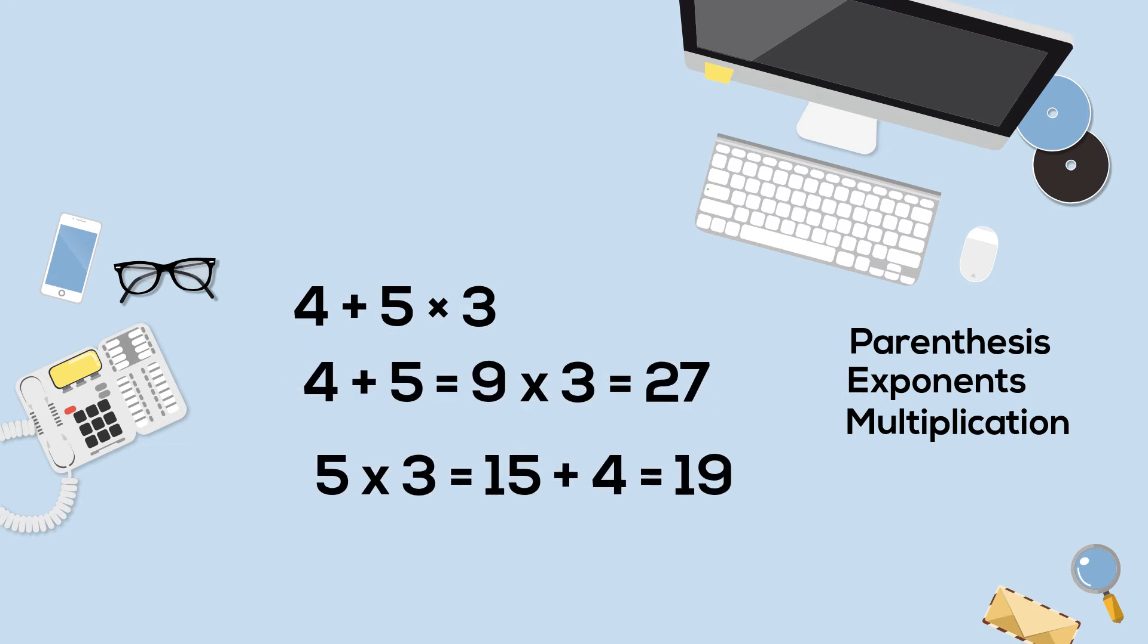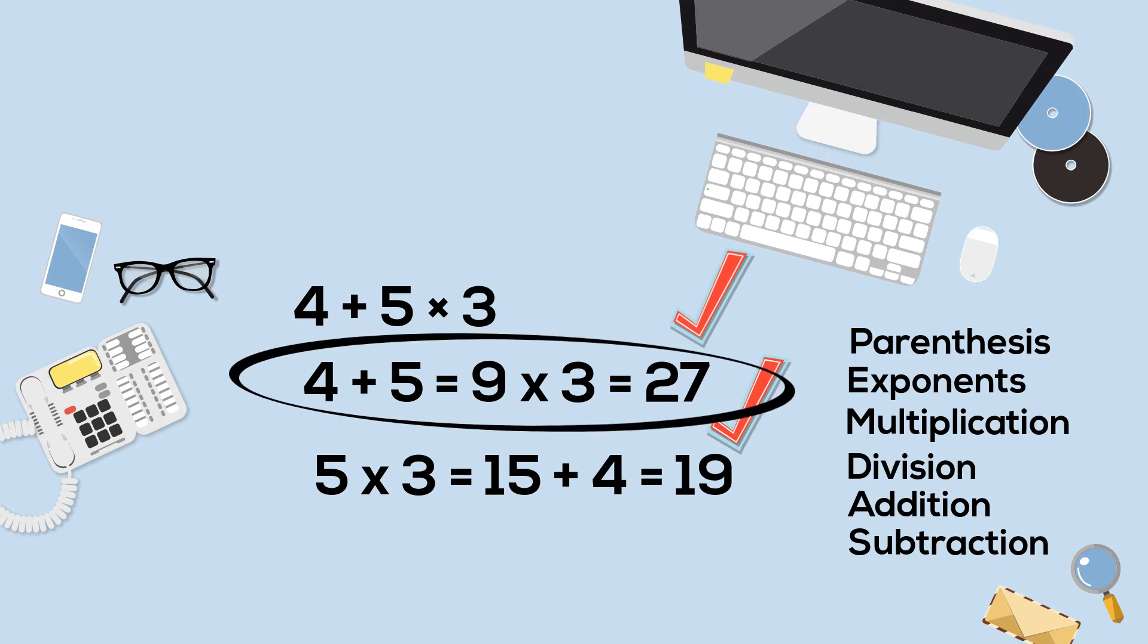Let's look at this next example. Which answer is correct, 27 or 19? For 27, you take 4 plus 5, which is equal to 9, then multiply that by 3, which is equal to 27. So you're just going from left to right.